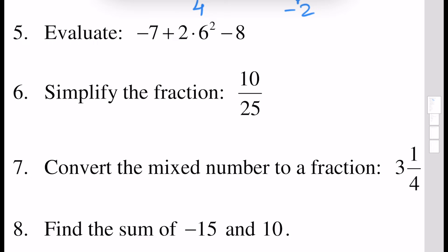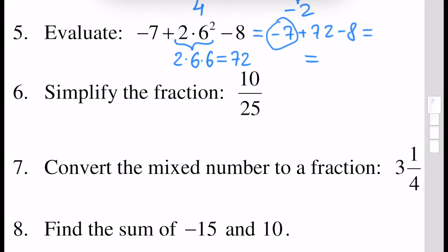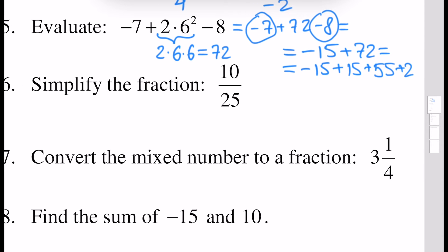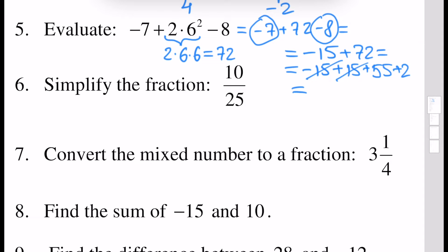Next, we have to calculate first this part of our expression: 2 times 6 squared is the same as 6 times 6, and 2 times 6 times 6 will give us 72, so we have minus 7 plus 72 minus 8. Minus 7 and minus 8 will be minus 15 plus 72. Minus 15 plus 72 can be written as minus 15 and 72 equals 70 plus 2, and 70 is 15 plus 55, so minus 15 plus 15 will offset each other and we will have 57, since 55 plus 2 is 57.